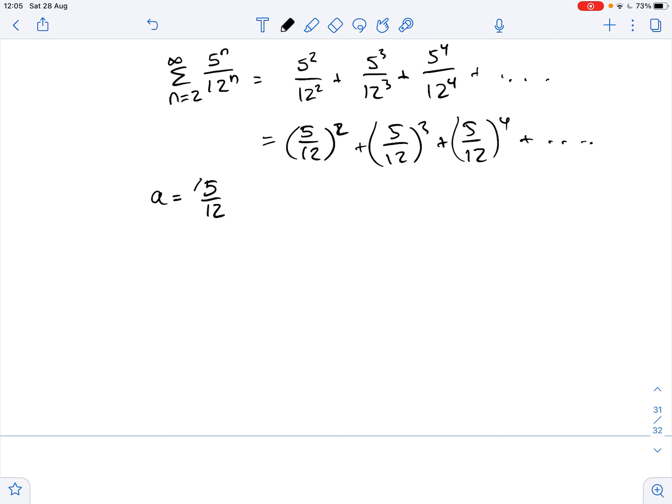We clearly see that the first term here, a, equals 5 over 12 squared and the common ratio r equals 5 over 12.